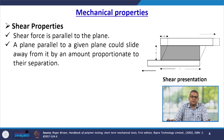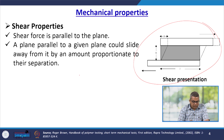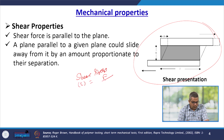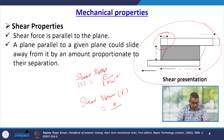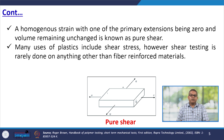Now let us talk about the shear properties. Usually the shear force is parallel to the plate. Here this is the shear presentation, and a plane parallel to a given plane could slide away from it by a certain amount proportionate to the separation. The shear stress can be represented as tau, which is F over xw, where w is the width. The shear strain, that is gamma, can be represented as x over h. A homogeneous strain with the primary extension being zero and volume remaining unchanged is known as pure shear.